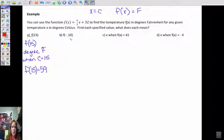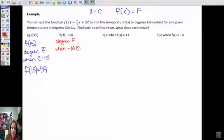F of x equals negative 10. Again, we're given an input. We're given an x, so that's negative 10 degrees Celsius. F of negative 10 is going to be the degrees in Fahrenheit when we're at negative 10 degrees Celsius. When we're at negative 10 degrees Celsius, then what are the degrees in Fahrenheit?